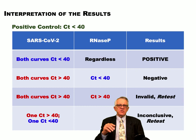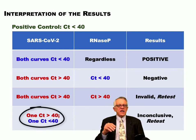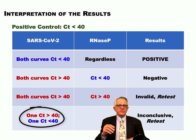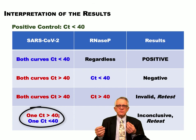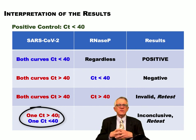Similarly, if one set of primers gives a CT above 40 and the other gives a CT below 40, this is also inconclusive and inconsistent. Both sets of primers should amplify equally, so the sample should not be considered valid. That's a simple summary of what we do.